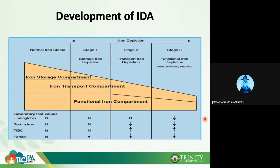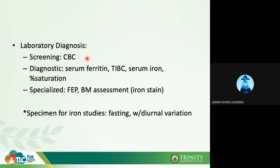The first laboratory test to decrease in iron deficiency anemia is serum ferritin. In stage three — functional iron depletion — all compartments are depleted, serum iron and ferritin are decreased, TIBC is increased, and now hemoglobin is also decreased. For laboratory diagnosis: screening uses CBC, but diagnostic testing includes serum ferritin, TIBC, serum iron, percent transferrin saturation, free erythrocyte protoporphyrin, and bone marrow iron stain. Specimens should be fasting and collected in the morning.